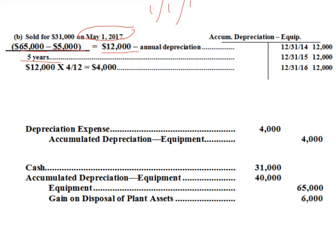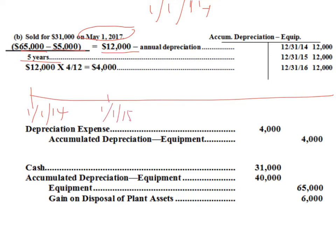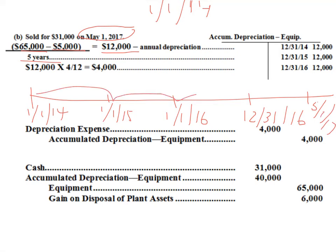We bought the equipment on January 1st, 2014. We had it for one full year through 2015, then another full year through 2016 — that's $12,000 each year. We did not keep it for the full year in 2017 since we sold it on May 1st. The last time we updated depreciation for a full year was December 31st, 2016, so we have $36,000 accumulated so far.